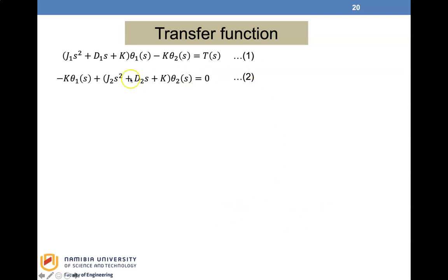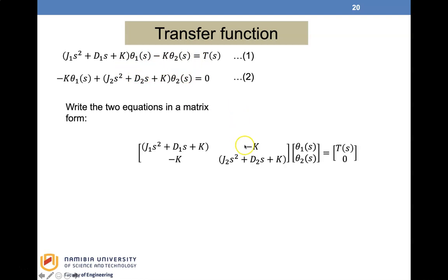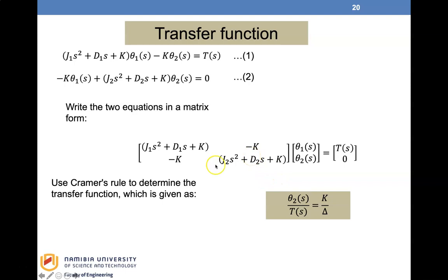We now have two simultaneous linear equations. Writing them with theta-1 and theta-2 terms separated, we can cast them into matrix form. With the matrix form, we apply Cramer's rule to determine the transfer function.